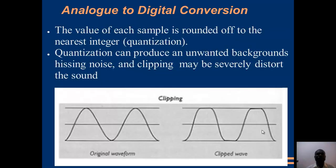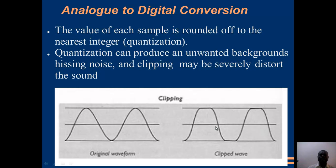The value of each sample is rounded off to the nearest integer. When you sample, you take digital snapshots of the sound and round them to the nearest integer — either one or zero. Quantization can produce unwanted background hissing noise, and clipping may severely distort the sound. When you clip, it makes the sound flat by cutting off the maximum amplitudes, making the sound very flat. Clipping is not good for audio recording and should be avoided.